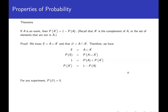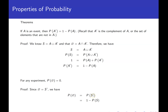The next theorem says that P(∅) = 0. This follows directly from the previous theorem: the complement of the sample space S is the empty set, because every outcome is in S, so nothing is outside it. Using the complement rule: P(∅) = P(S') = 1 − P(S) = 1 − 1 = 0.